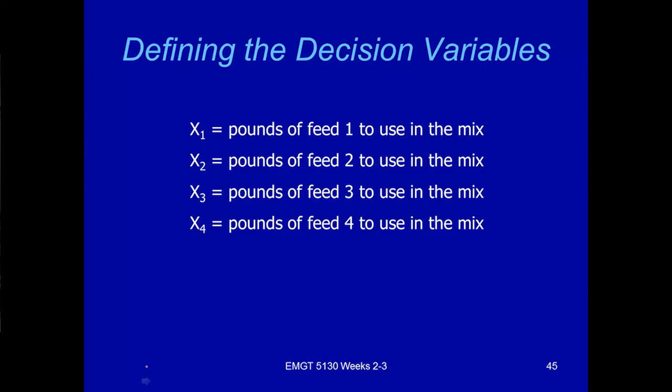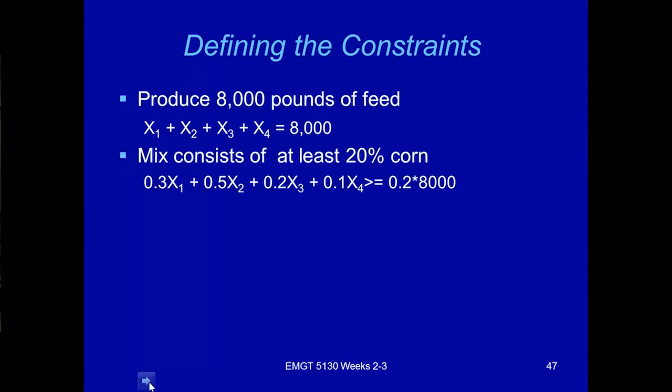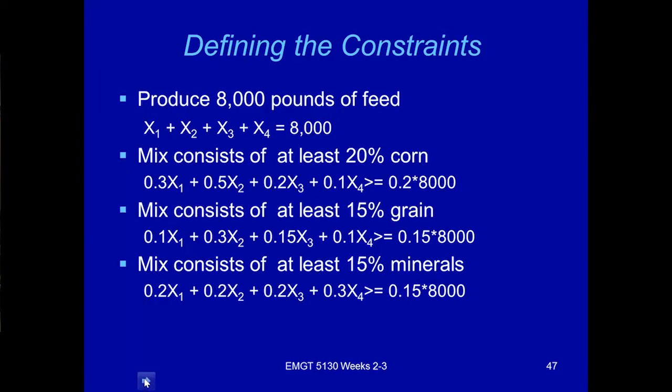Just to summarize, on the slide I use X1, X2, X3, X4 to represent the pounds of feed to use in that mix. Minimize total cost, which is the sum product of the unit cost and the decision variables, and the constraints are these ones. For this problem, I'll ask you to follow the textbook to implement the Excel model yourself.